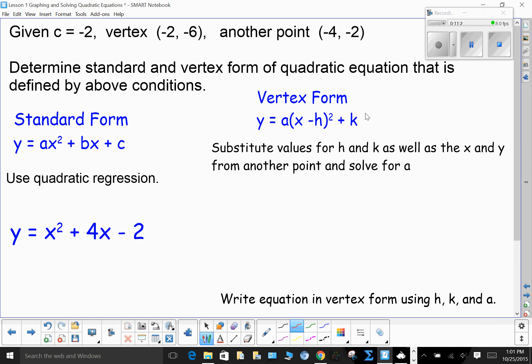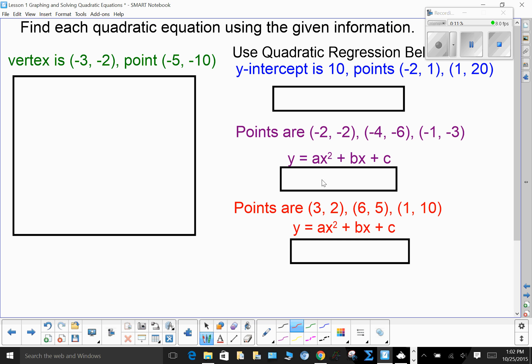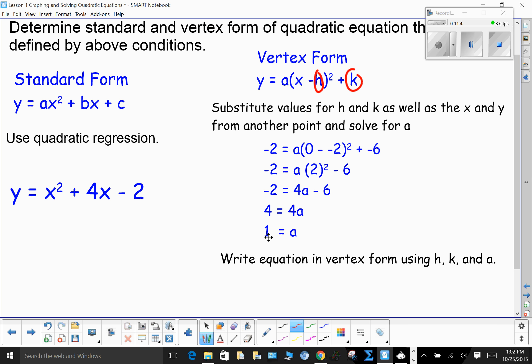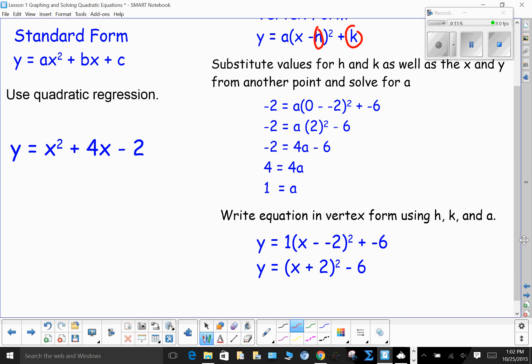Now, the vertex form. Remember, you're given the vertex right here. So, I can put in the -2 for my h and the -6 for my k. I don't want to jump ahead just yet. And that's what I did. And I solved it. And then, I have that a is equal to 1. Since a is equal to 1, I have the vertex form of the equation.